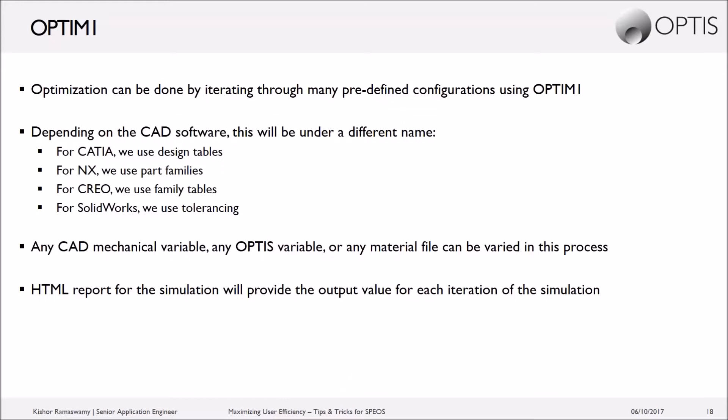The second thing this Optum One option enables is creating iteration tables, where you predefine many different configurations and tell the software to run through each one and provide output results for each iteration. This is called something different depending on which CAD software you're using: in CATIA they're called design tables, in NX they're known as part families, in Creo they're called family tables, and in SolidWorks it uses something called tolerancing. The idea is the same: create a predefined list of configurations and run through them automatically rather than one by one manually.